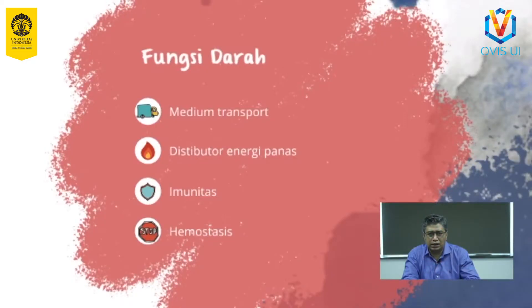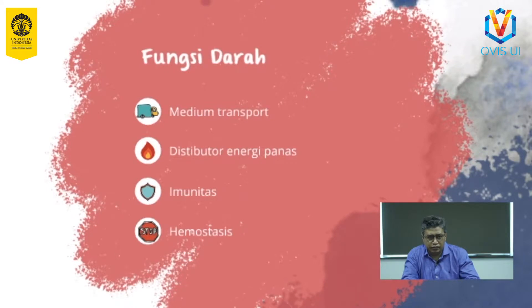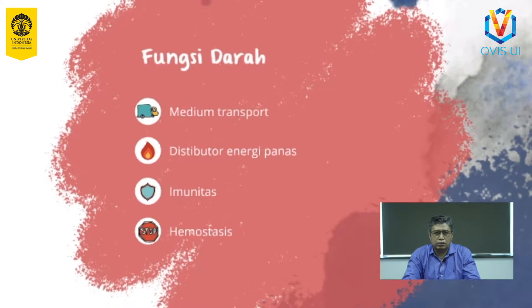Dalam tubuh manusia dewasa, darah mencakup 7-8% dari keseluruhan berat badan tubuh, yaitu sekitar 5 liter pada wanita dan 5,5 liter pada laki-laki. Darah memiliki banyak fungsi: pertama sebagai medium transport bagi zat-zat anorganik atau organik; kedua darah sebagai medium yang mendistribusikan energi panas. Kedua fungsi tersebut merupakan fungsi dari plasma darah. Fungsi lainnya berkaitan dengan fungsi sel-sel darah, seperti transportasi oksigen dan karbon dioksida oleh sel darah merah, fungsi imunitas tubuh oleh sel darah putih, dan hemostasis oleh trombosit.